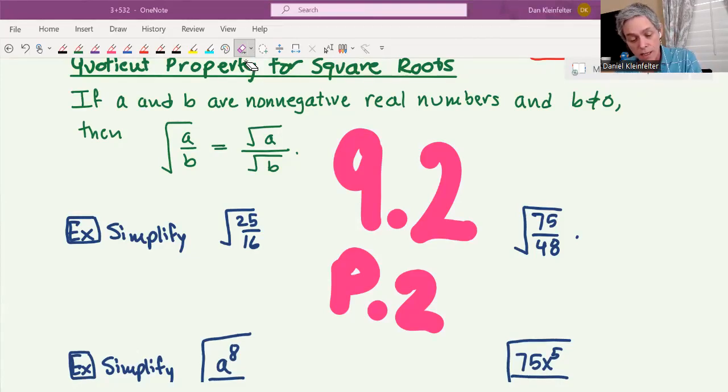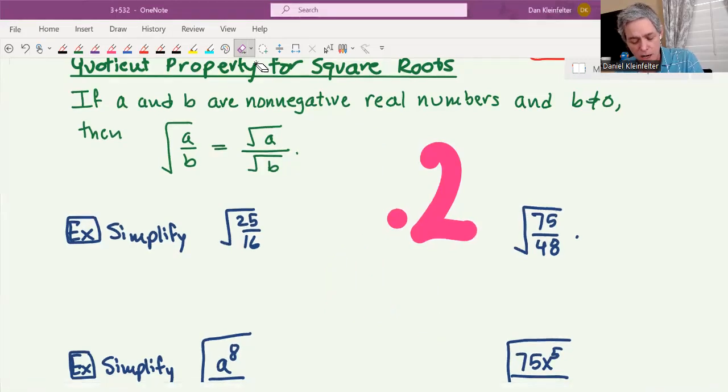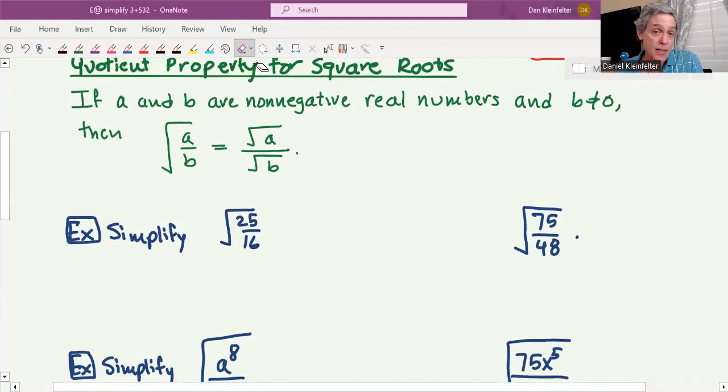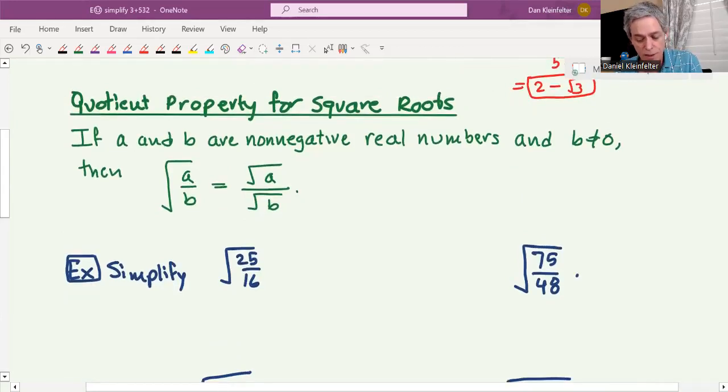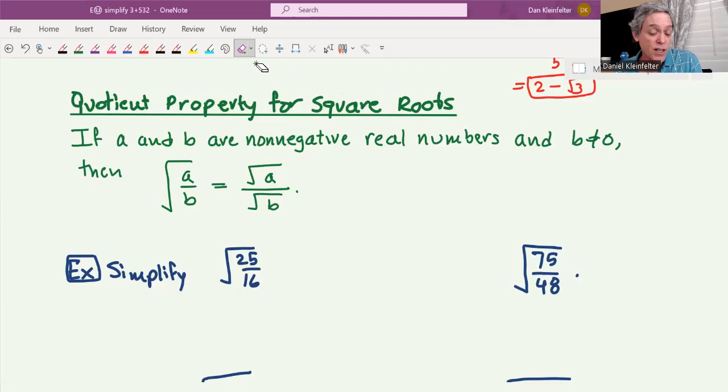In the first half, we looked at how we had a product property for roots that lets us split up a square root into a product of two square roots. The quotient property is similar, except it deals with a quotient. If A and B are non-negative real numbers and B is non-zero, then the square root of A divided by B is the same as the square root of A divided by the square root of B. In other words, if you have a fraction and you're taking a square root of it, you can break the square root in half at the fraction bar.